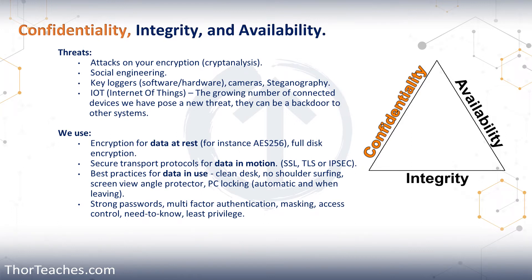To protect against all these bad things, let's look at what we do with the three different types of data. We have data at rest — that's data sitting on disk somewhere, not being used. We have data in motion — that's data traversing the network. And then we have data in use — actively being used on a workstation or server. For data at rest, we encrypt it. In many corporate environments, that's a lot of stuff — it could be AES-256 full disk encryption for all workstations. Whenever you log in every morning, it decrypts the hard drive. If we have more sensitive things, then we use stronger encryption.